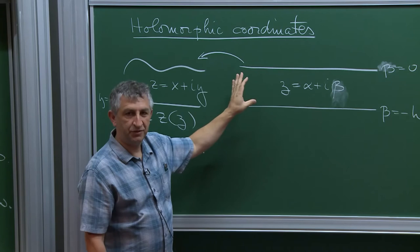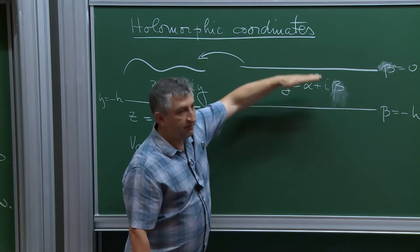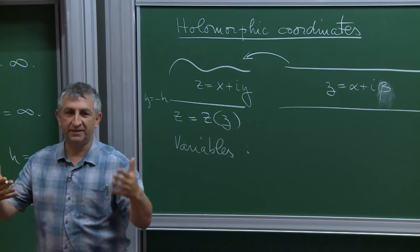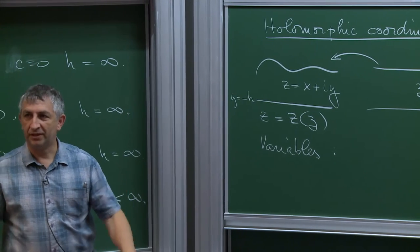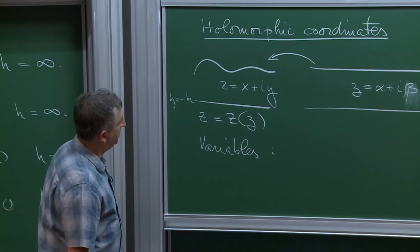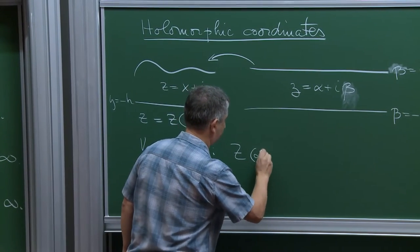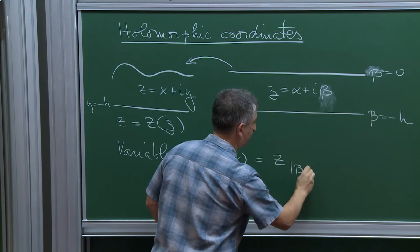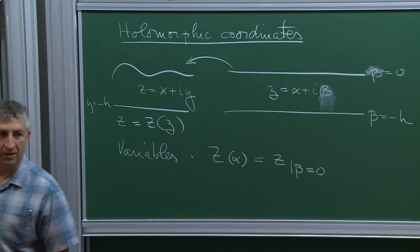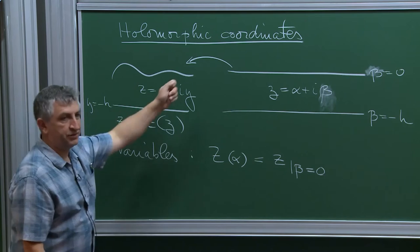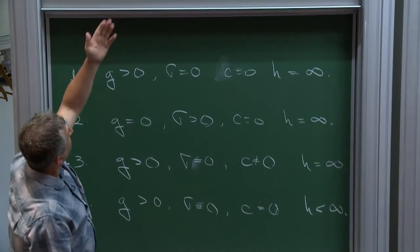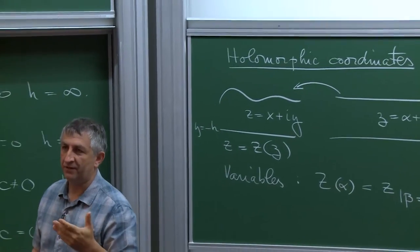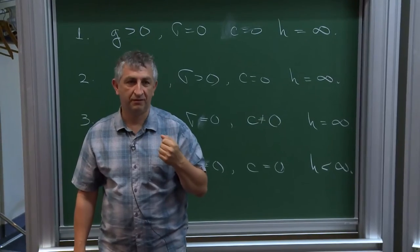When the depth is infinite you have two degrees of freedom: horizontal translations and scaling. You fix these so your equation is uniquely determined. Coming back to variables: the first variable is z of alpha — the conformal map restricted to the top, beta equals zero — which describes the surface. The second variable describes the velocity potential on the top. So z describes the surface, and q describes the velocity potential together with its harmonic conjugate.